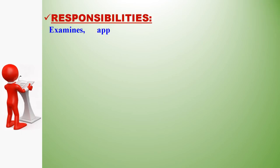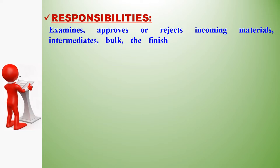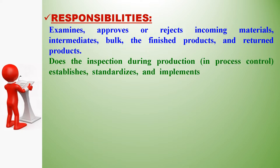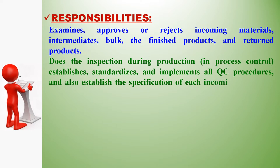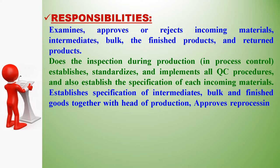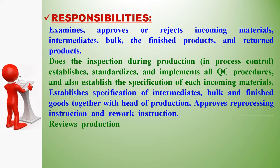QC responsibilities include: examining, approving, or rejecting incoming materials, intermediates, bulk, finished products, and returned products. QC also performs inspection during production in-process control, establishes, standardizes, and implements all QC procedures, establishes specifications for each incoming material, intermediates, and finished goods. Together with the head of production, QC approves reprocessing and rework instructions, and reviews production records to determine errors, ensuring investigations and corrective actions are taken.